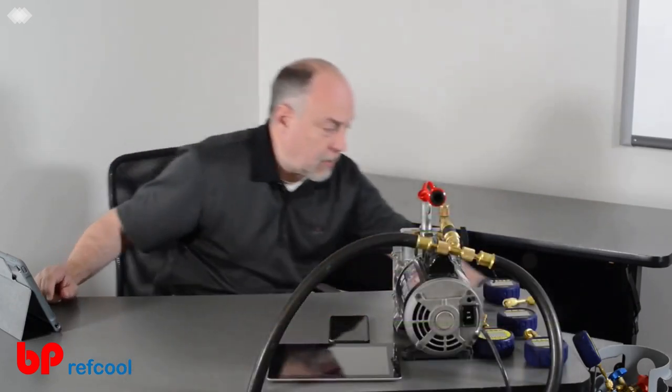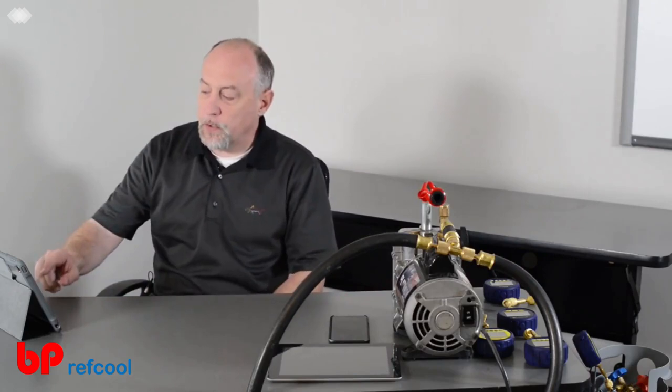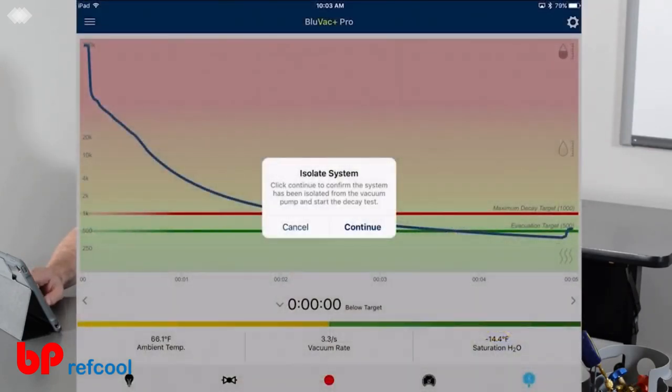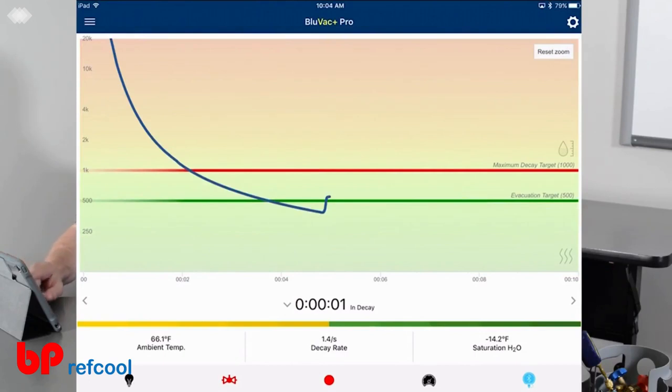Now it's held below the target for a period of one minute. I'm going to go ahead and close off my core tools. When I close off my core tools, you're always going to see a little bit of a decay in the vacuum.